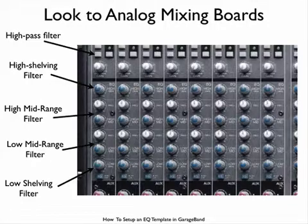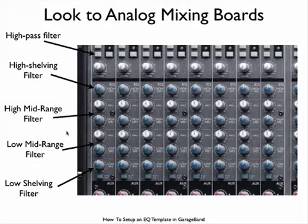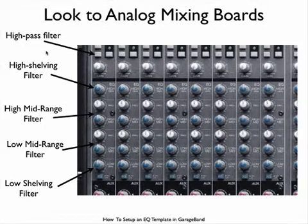To see the most important ways EQ is used, consider an analog mixing board. In hardware, only the most important recording and mixing features are given space on the mixing board, and we see the most important EQ features on each channel strip. These suggest EQ features we should have in our software GarageBand EQ template. First, we have a high-pass filter, which is used to remove sonic energy below an instrument's fundamental frequency, such as from low-end noise and rumbles.